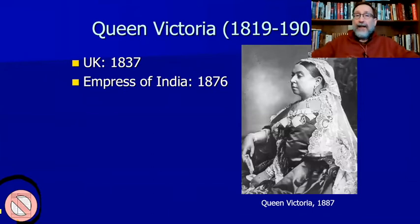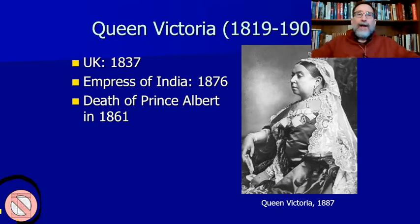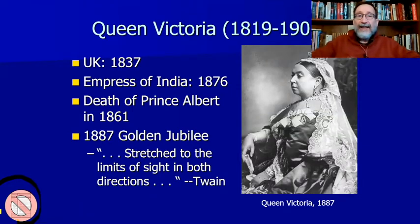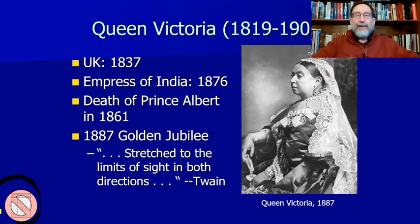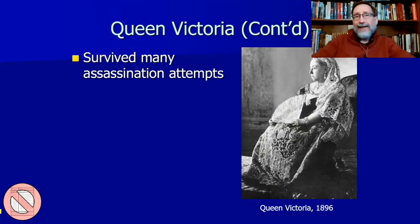India was the largest single colony under the British Empire's overarching umbrella. Her husband was Prince Albert, who was never a king. He dies in 1861, and she continues to reign until her death in 1901 — living most of her life as a widow. By 1887 they were able to celebrate a Golden Jubilee, a huge celebration. Mark Twain traveled to England promoting his books and was able to witness it, saying it stretched to the limits of your sight in all directions.